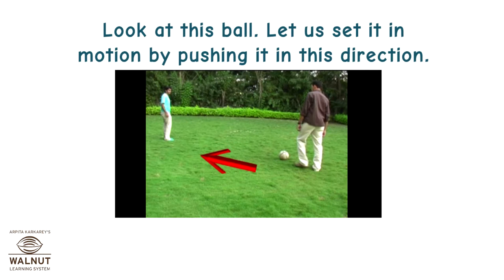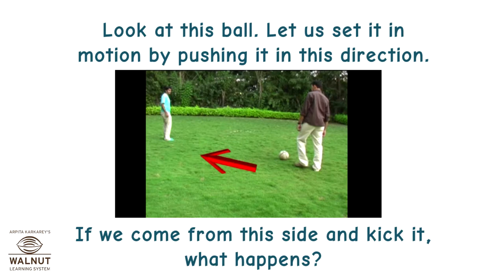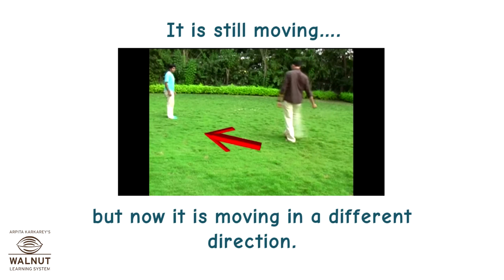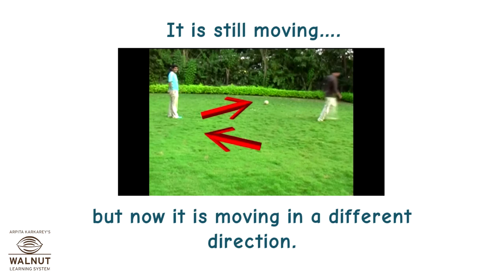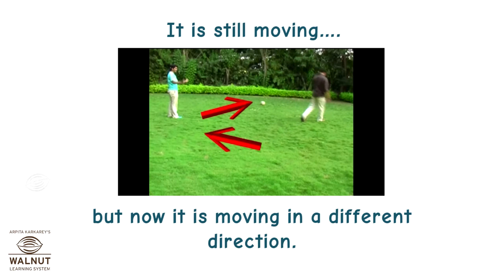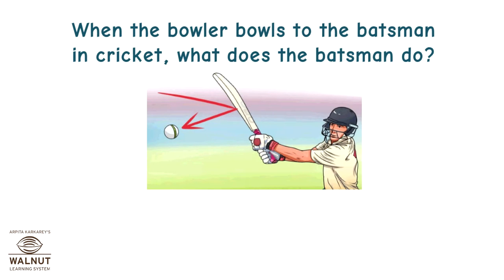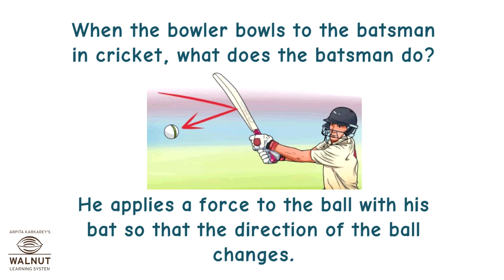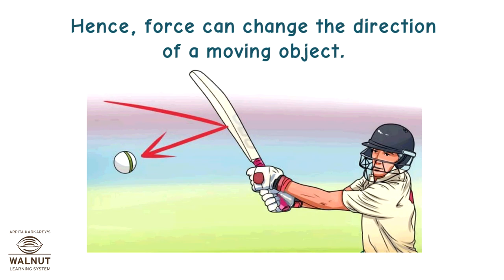Look at this ball. Let us set it in motion by pushing it in this direction. If we come from this side and kick it, what happens? When a bowler bowls to the batsman in cricket, what does the batsman do? He applies a force to the ball with his bat so that the direction of the ball changes. Hence, force can change the direction of a moving object.